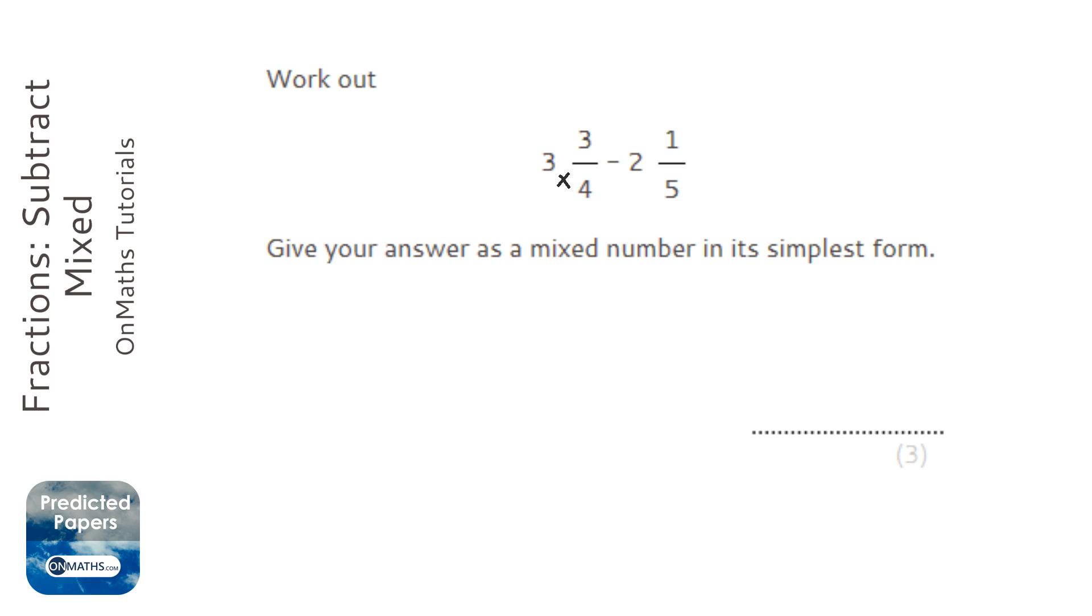So the way of doing that is you times the big number by the bottom, then add it to the top. So we're going to do 3 times 4, which is 12, add it to the top, 15. So that becomes 15 over 4.